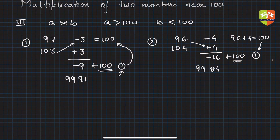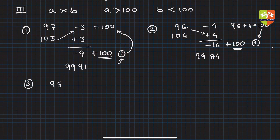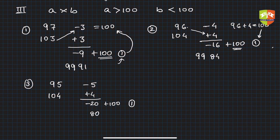Another one: 95 multiplied by 104. You get minus 5 and plus 4. Multiply: minus 20. Add 100 to it—this will be 80. Write 1 here. Then 95 plus 4 is 99; take away this 1, so 98. The product is 9880.